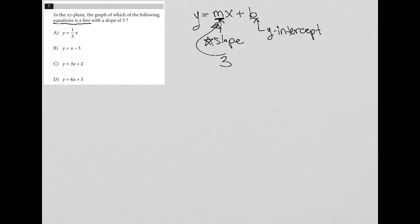where the M is, basically right in front of the X or multiplied by the X? So answer choice A does not, the slope here would be one third. We want a three. So that's gone.